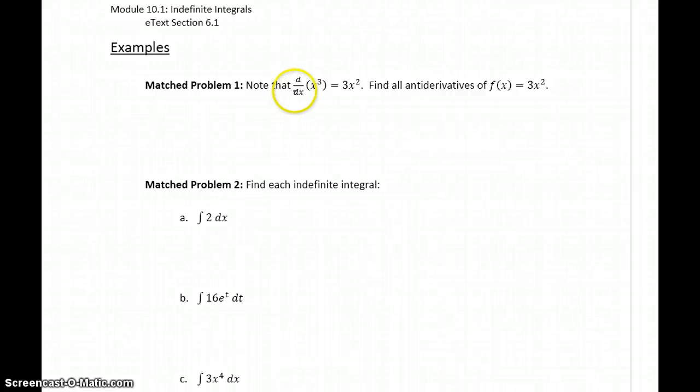In match problem 1, we're given this very simple derivative. The derivative of x cubed is 3x squared. So we want to find all anti-derivatives of f of x equals 3x squared.